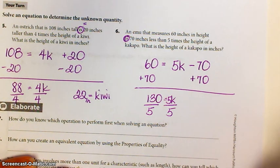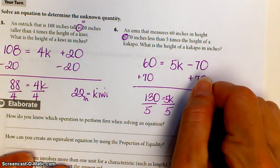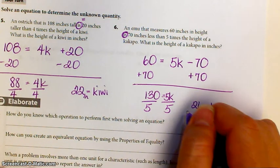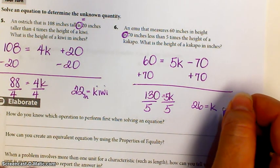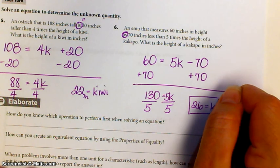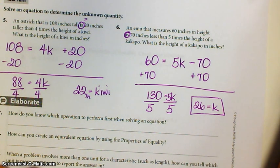And that is 26. That's the height of a kakapo, whatever the heck that is. That should do it for lesson one of module one.